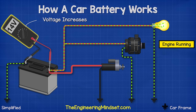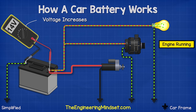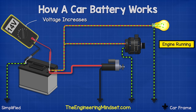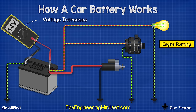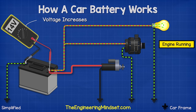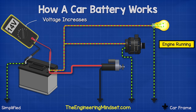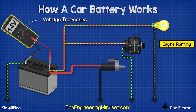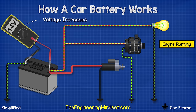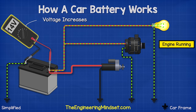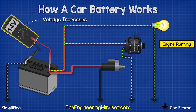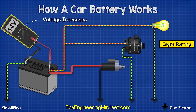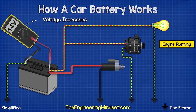Once the engine is running, the alternator should be generating electricity and so we should see a higher voltage of around 14 volts. That's because the alternator is recharging the battery and the voltage needs to be higher to help force electrons back in and reverse the chemical reaction.